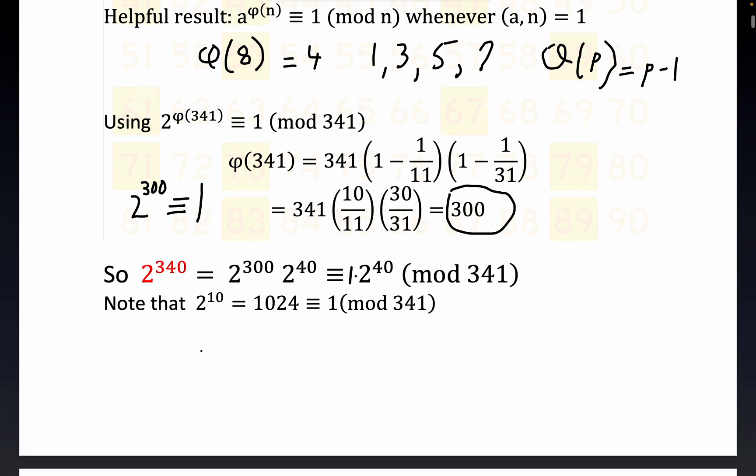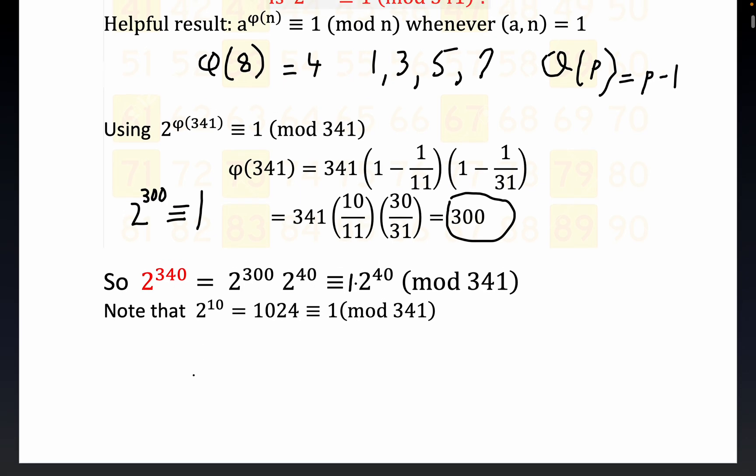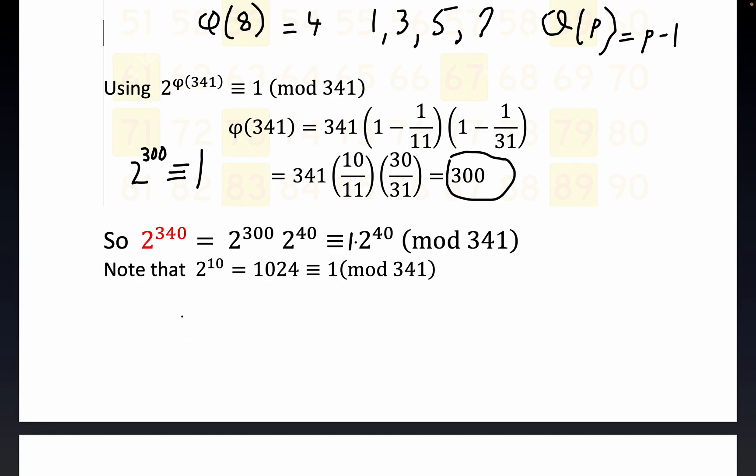Now why is that helpful? Because we can now write down 2 to the 340 power. We've already shown it's congruent to 2 to the 40th, but that's equal to - and here's where just laws of exponents and the totient helps us not have to do any big calculations.